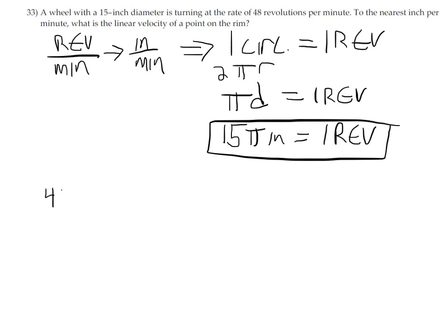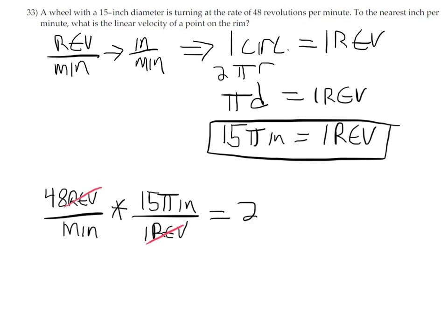So now let's go to our problem of 48 revolutions per minute. We can convert knowing one revolution is 15π inches. The revolutions will cancel and we end up with inches per minute. This is just a calculator problem now. Plugging this into our calculator gives us a decimal, but they ask for the nearest inch. That decimal is 2261.9 inches per minute. So this would be 2262 inches per minute.